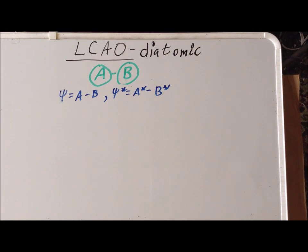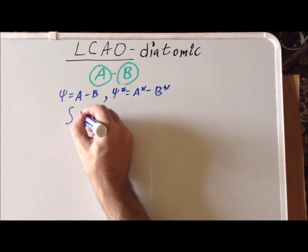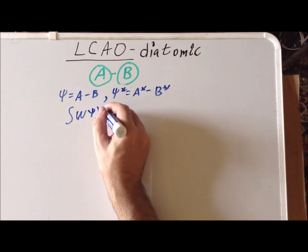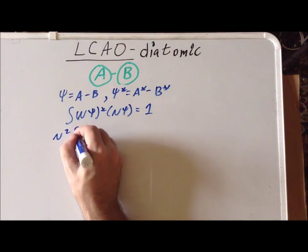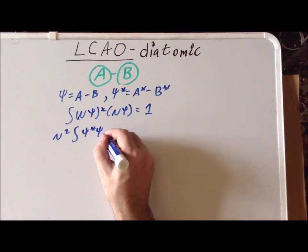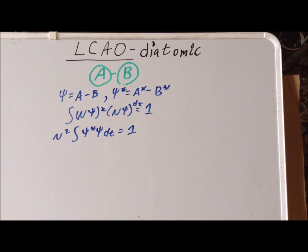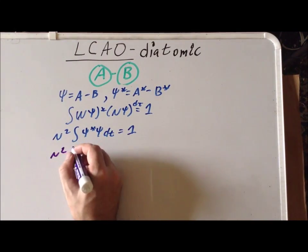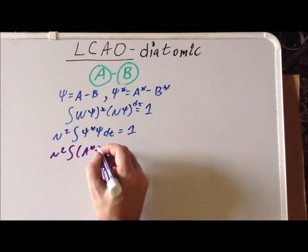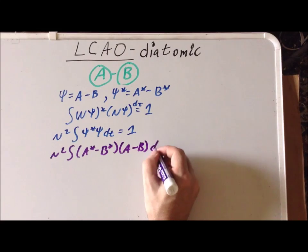So recall, to find the normalization constant, we want to set the integral of N times psi-star, N times psi, equal to 1. That is equivalent to factoring out an N-star at the beginning times psi-star psi d-tau, setting that equal to 1 and solving for N. We substitute in the exact expressions for psi: we have N-squared in front, then we have (a-star minus b-star) times (a minus b) d-tau, which is equal to 1.